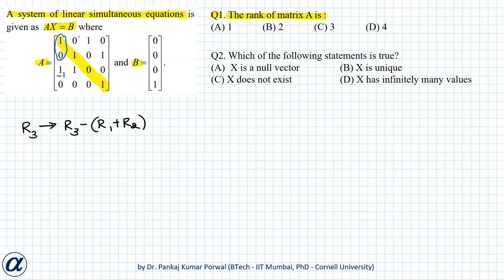0 plus 1 so minus 1 from here, 1 plus 0 minus 1 from here, and 0 plus 1 minus 1 from here. This will give me 1 0 1 0, 0 1 0 1, 0 0 minus 1 minus 1, 0 0 0 1. This matrix is in row echelon form.